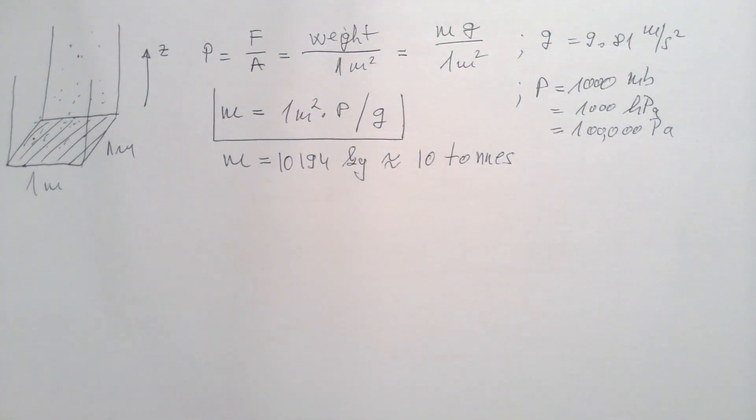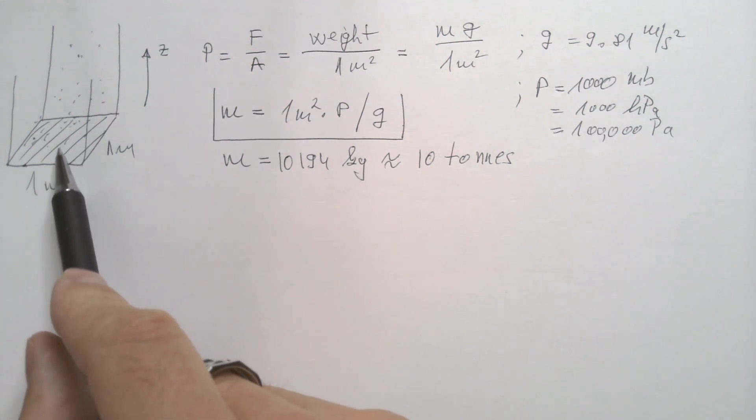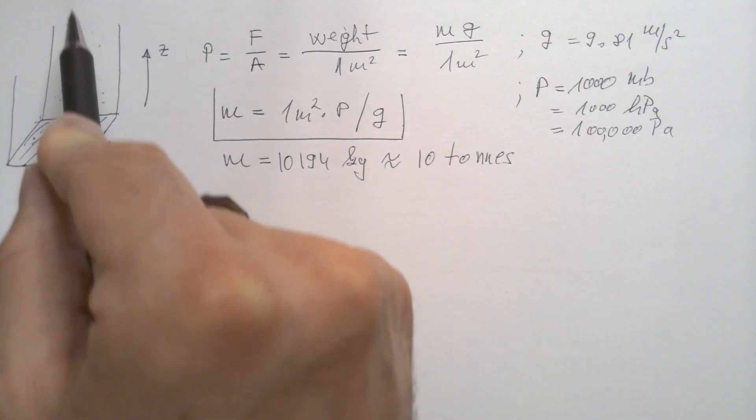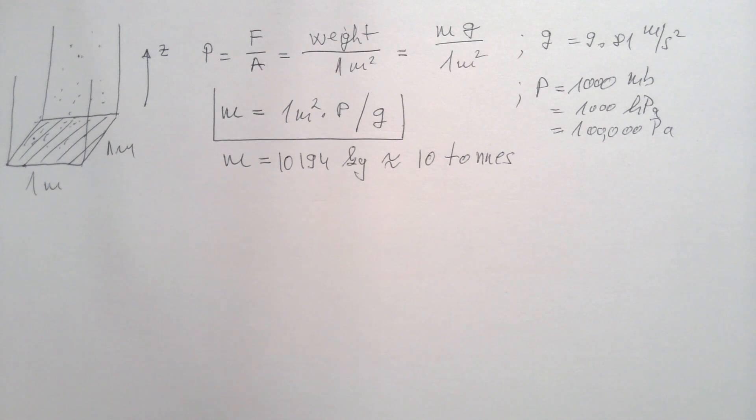For your reference, one average-sized car is about 2 tons. So approximately 5 stacked cars are as heavy as a column of air stretching from the surface all the way to the top of the atmosphere.